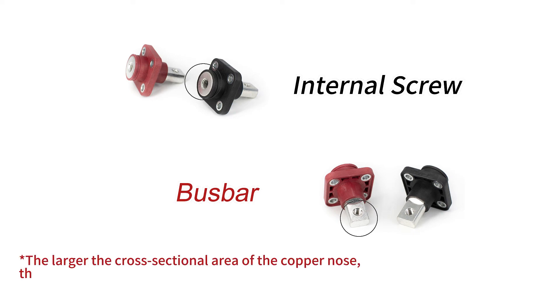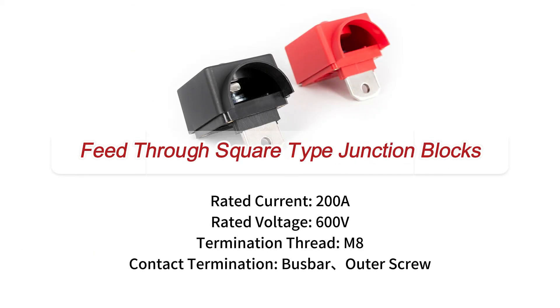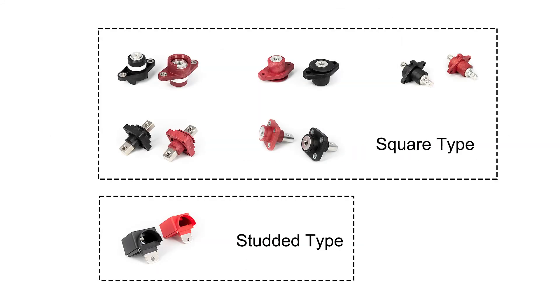The larger the cross-sectional area of the copper nose, the greater the current it can carry. The last one is a square junction block, which is different from the other five. As you can see, they are obviously different in appearance.